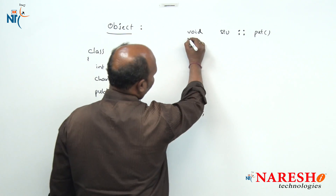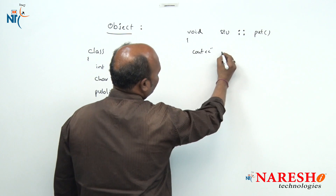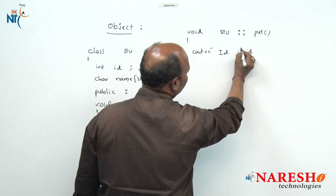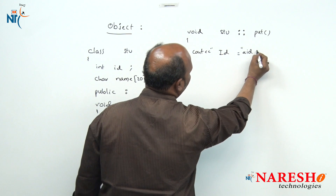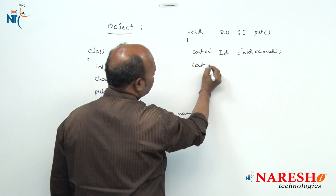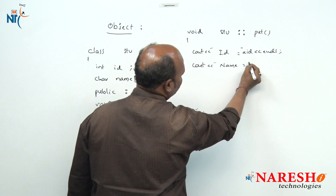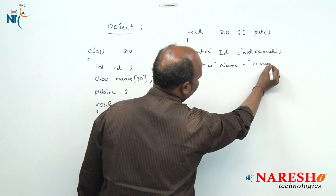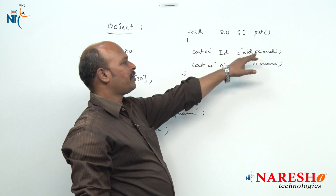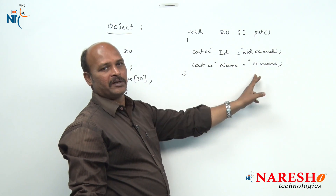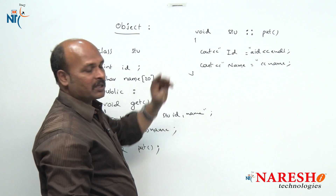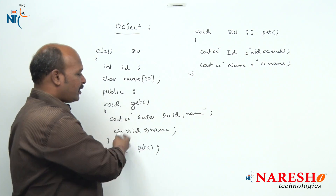The body of the outside-defined function would be: cout id equals id, then cout name equals name. So first the id is printed, then the name. That is how to define a member function both outside and inside the class.